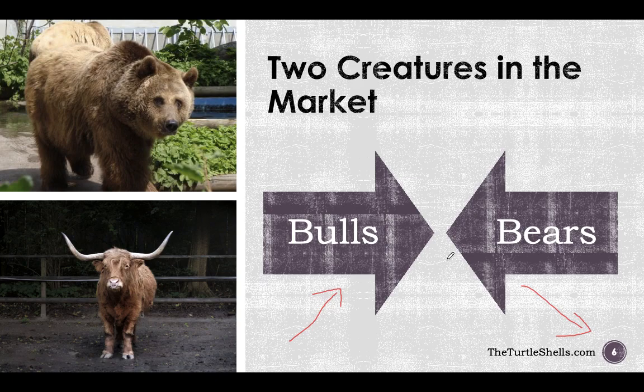When we are looking at any chart, we need to understand who is more powerful in the market — is it the bulls or is it the bears? If the bulls are more powerful in the market, I will buy or I will take a long position. If the bears are more powerful in the market, I will sell or I will take a short position.